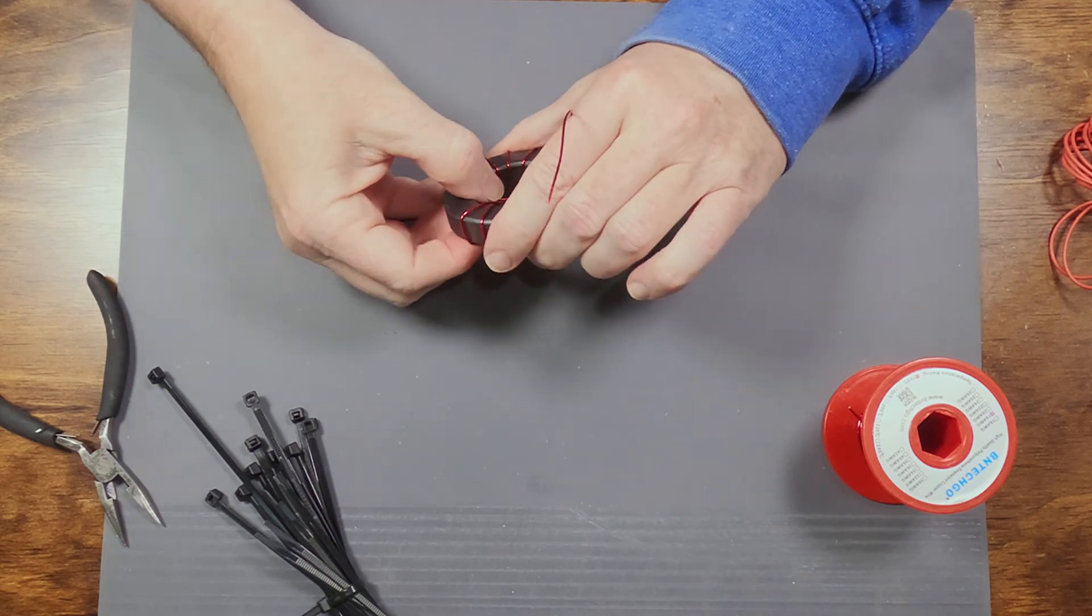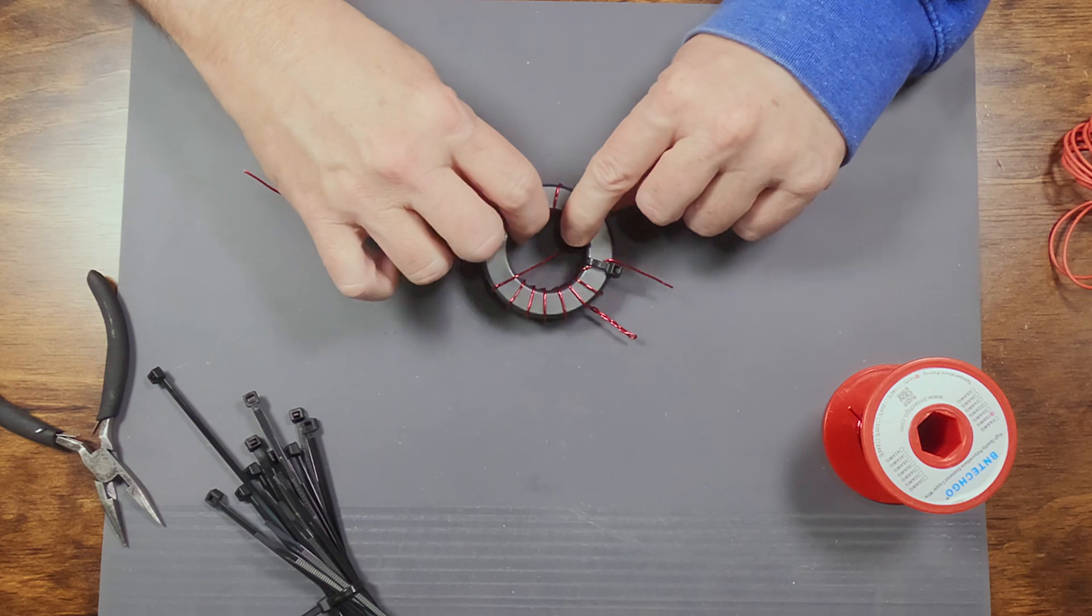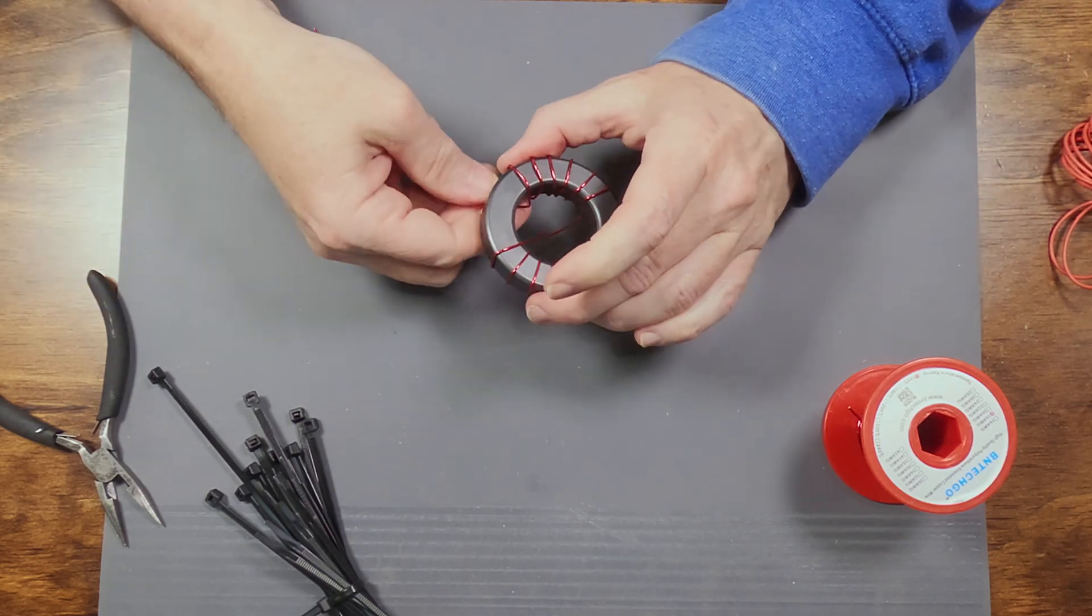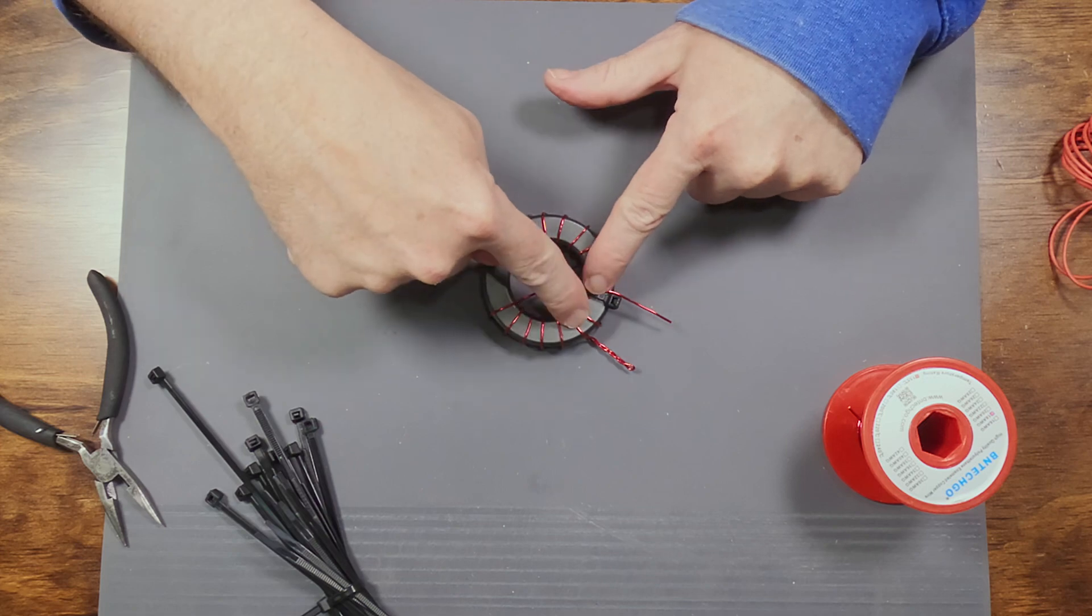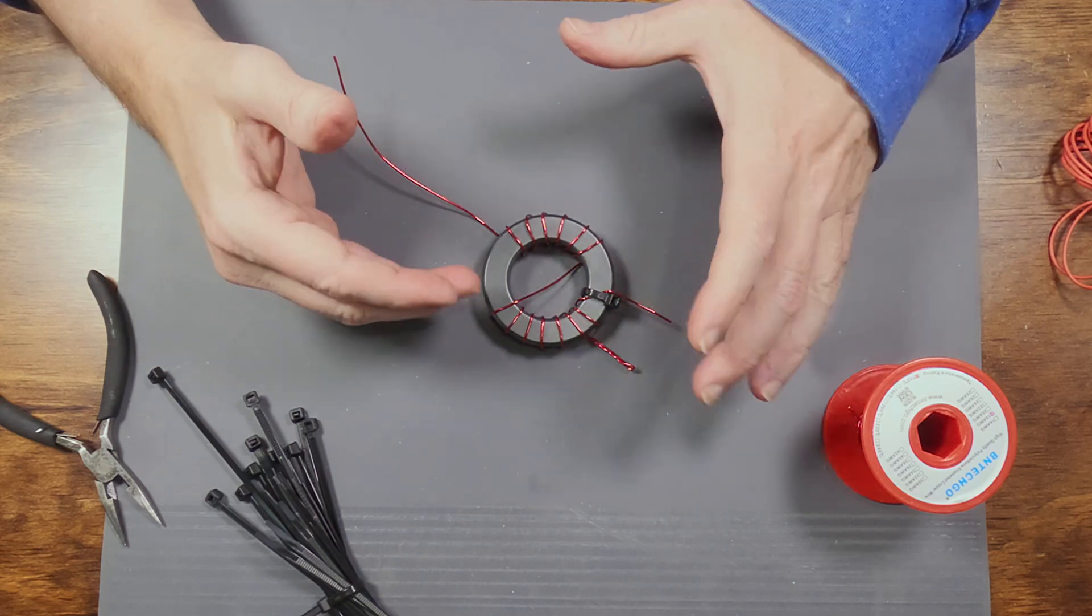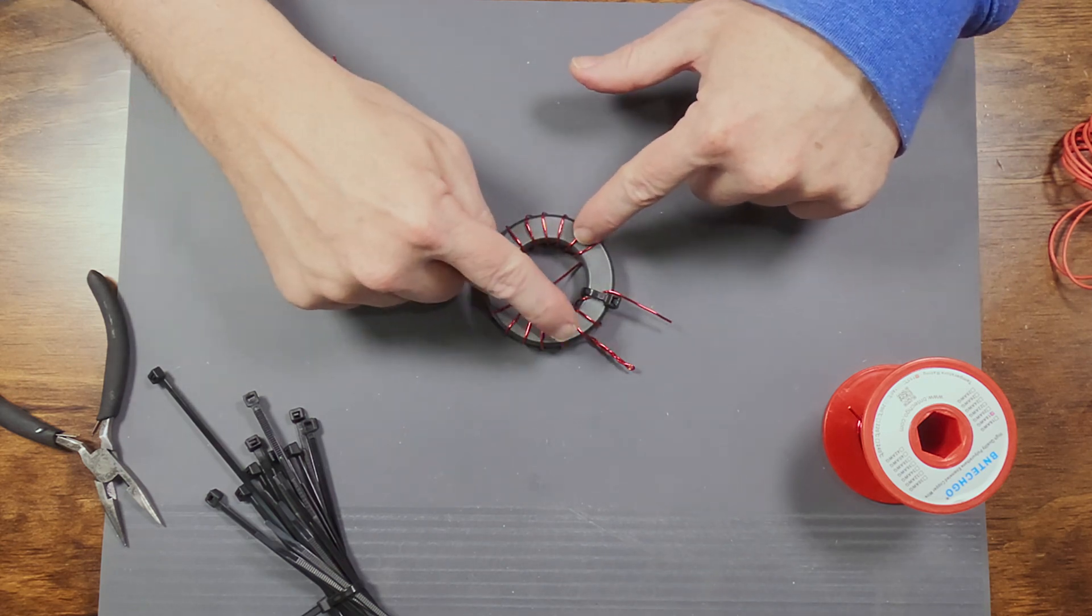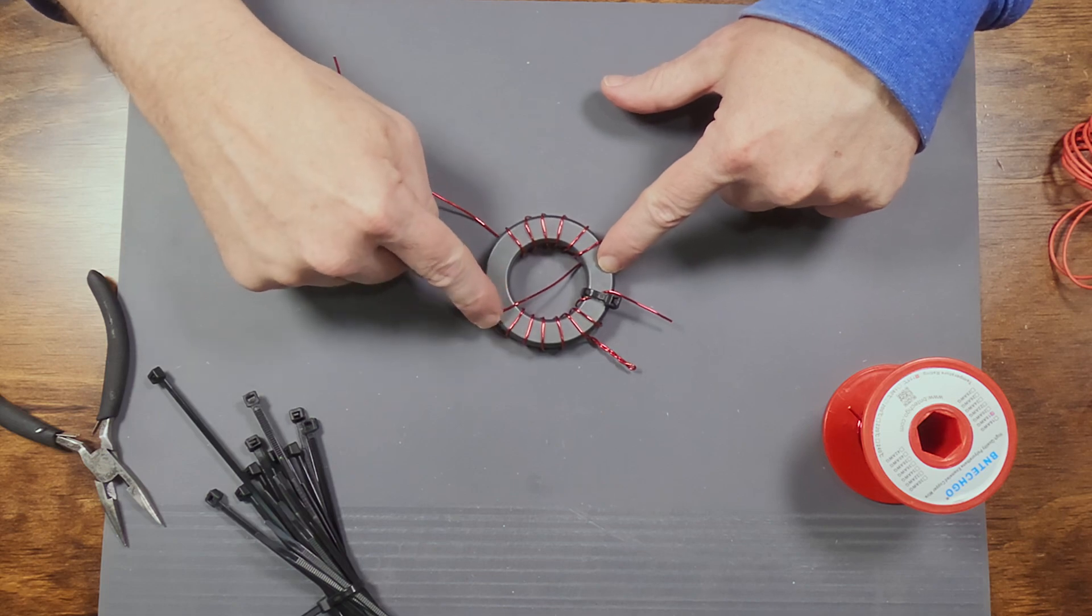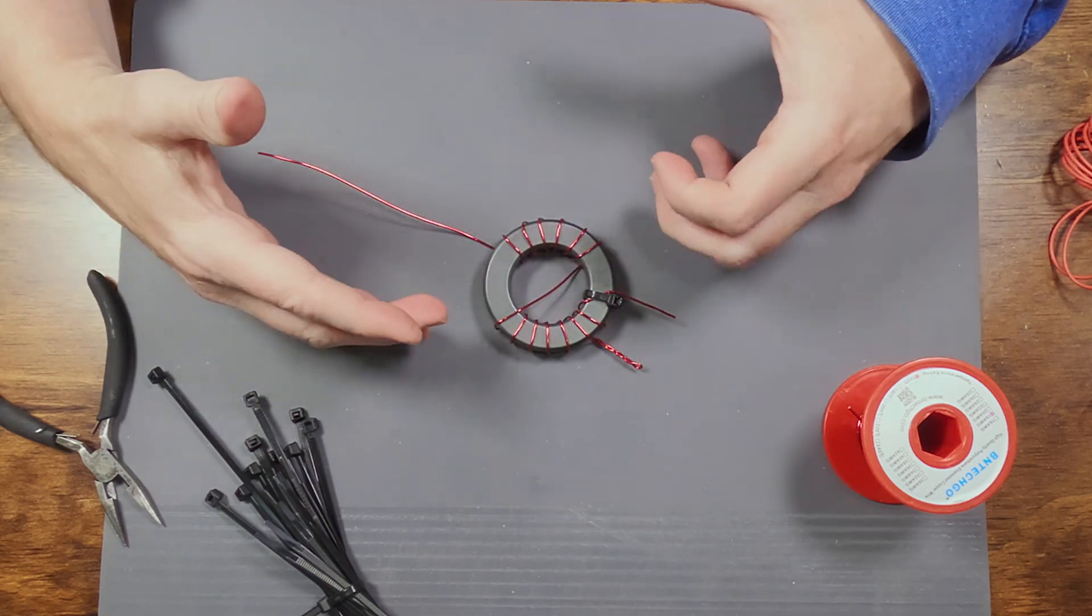Okay, and here goes turn number 14. Now, turn number 14 gives me a total of 14 to 2 wraps. Seven to one turns ratio. That's a 49 to one impedance ratio. If you wanted to do the 64, you would want 16 total turns versus your two. So you would put one more in over here before you did the cross wrap and one more on this side to give you a total of 16 instead of a total of 14.